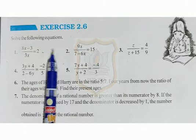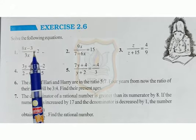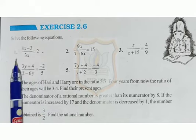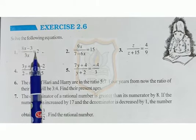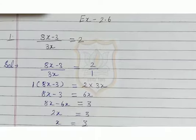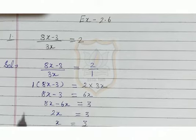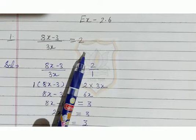In this exercise we will use cross multiplication. I have already told you in the previous video. The first sum is: 8x minus 3 upon 3x is equal to 2. Solution of the first sum of exercise 2.6: 8x minus 3 upon 3x is equal to 2.